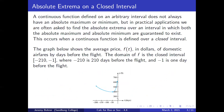A continuous function defined on an arbitrary interval does not always have an absolute maximum or minimum, but in practical applications we are often asked to find absolute extrema over an interval where both the absolute maximum and minimum are guaranteed to exist. This occurs when a continuous function is defined over a closed interval.